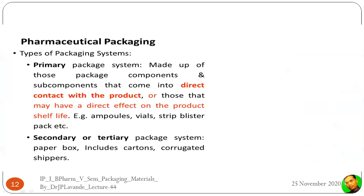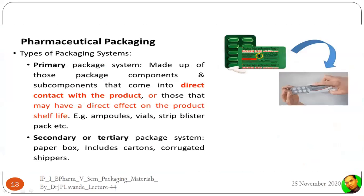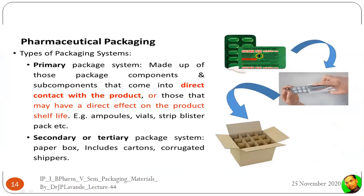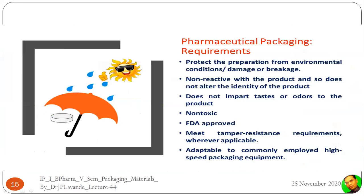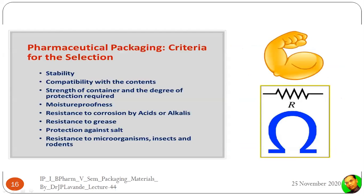We saw the different kinds of packaging: primary packaging, secondary packaging, and tertiary packaging. Primary packaging remains directly in contact with the product, while the primary-packaged material is placed into the secondary packaging, and the secondary packaging is placed into the carton for shipment and storage.